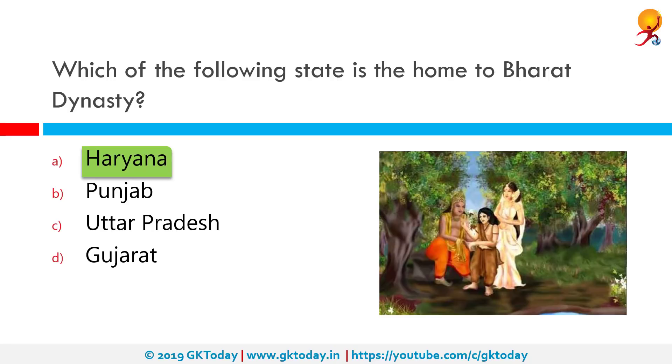The Drodha Bharatas are a prominent community in the Rig Veda. The story of Bharat is first told in the Adi Parva of Mahabharata, wherein he is the son of Dushyant and Shakuntala.